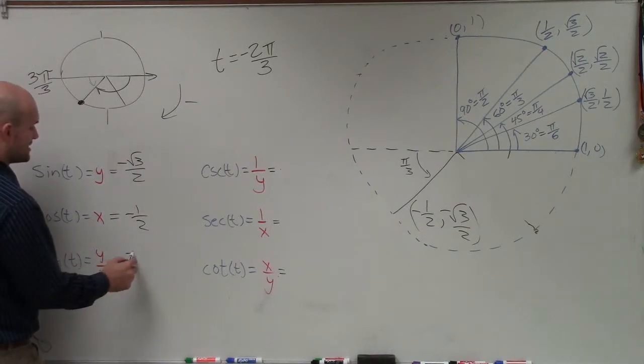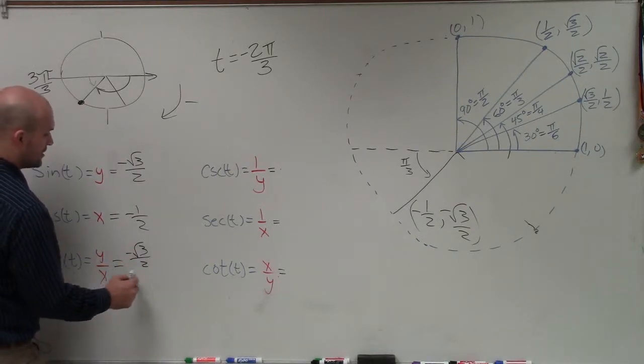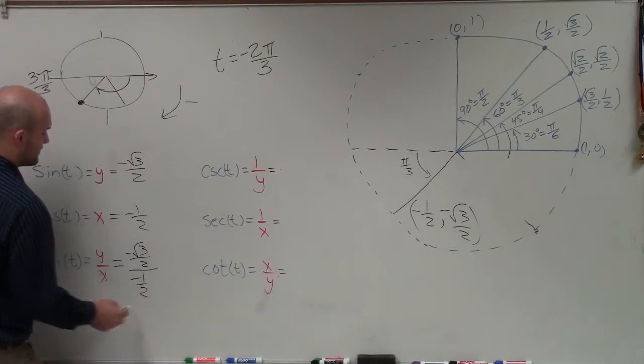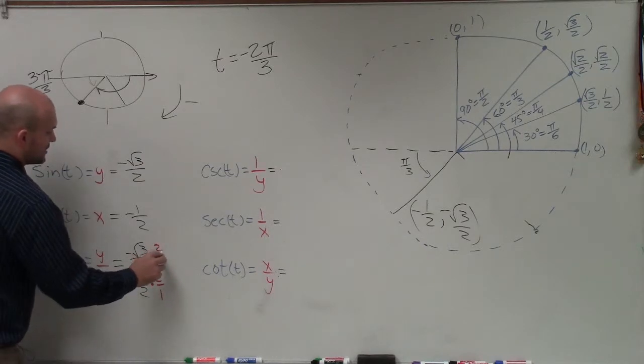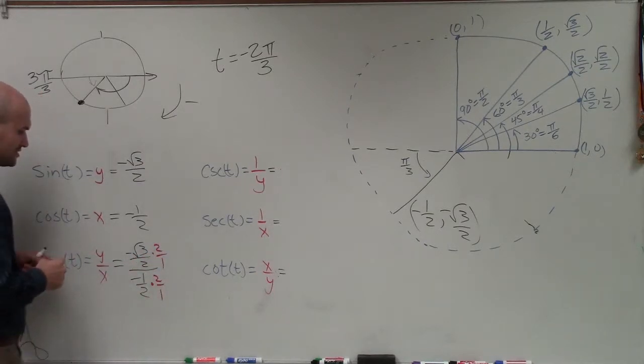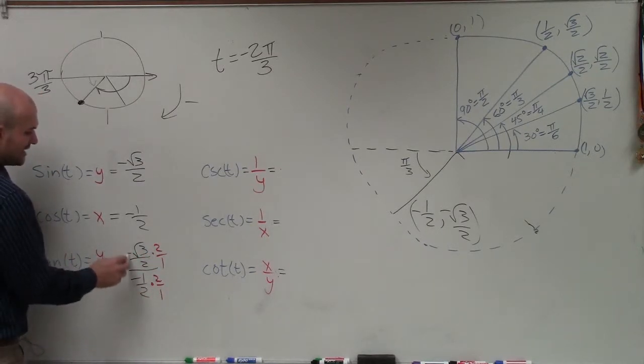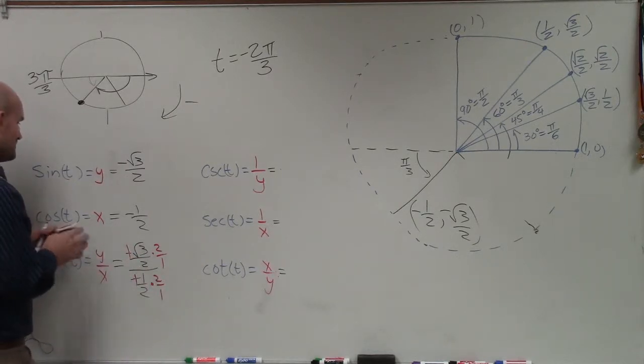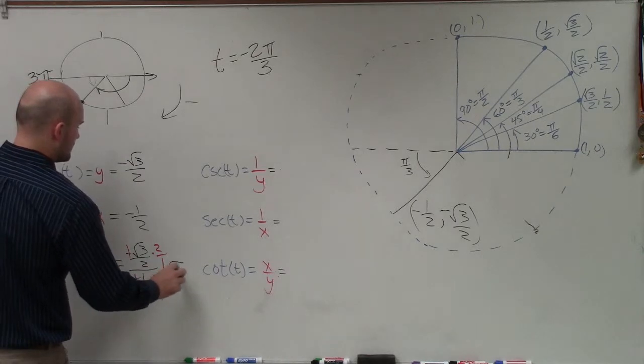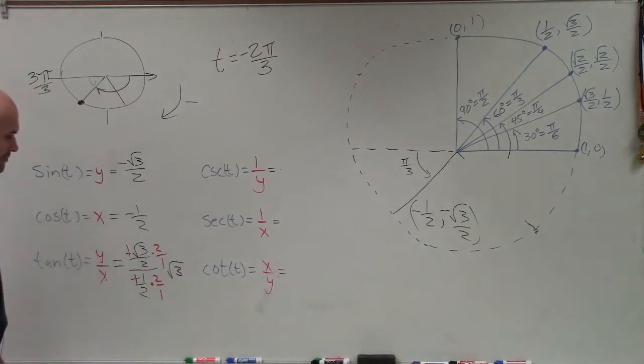And the tangent is going to represent negative square root of 3 over 2 divided by negative 1 half. Now, we can just multiply by the reciprocal in our denominator. Once you get kind of good at this, you can just kind of eliminate those 2's. And we also know that our two negatives divide will make a positive. Therefore, that's going to multiply out. And we're going to be left with the square root of 3 will be our final answer.